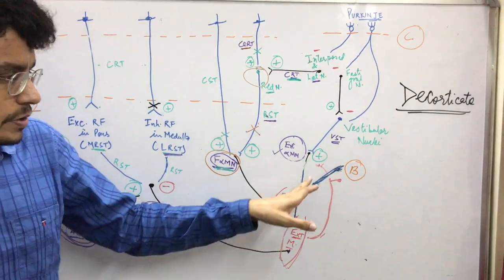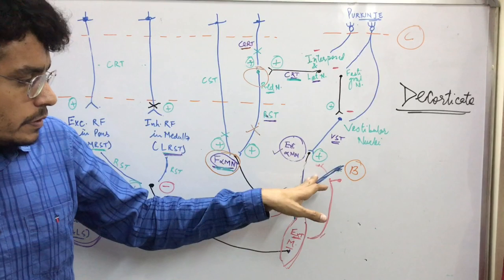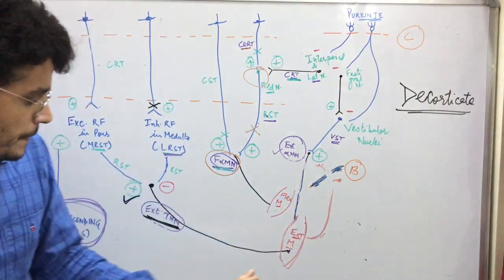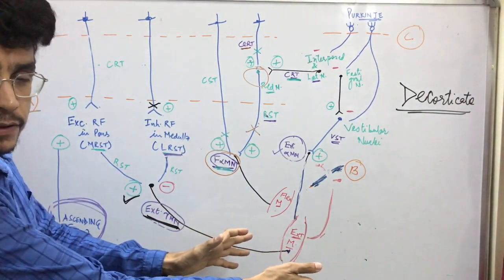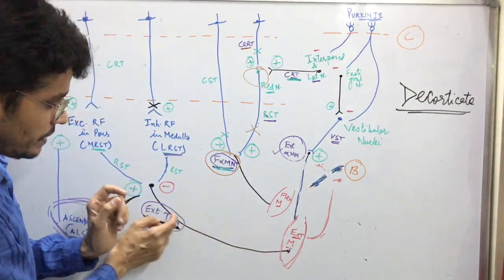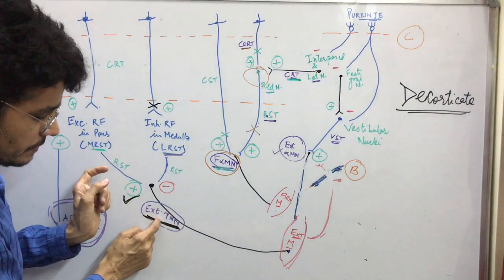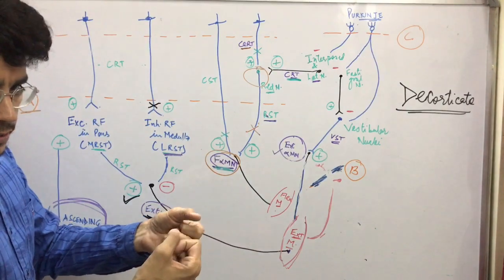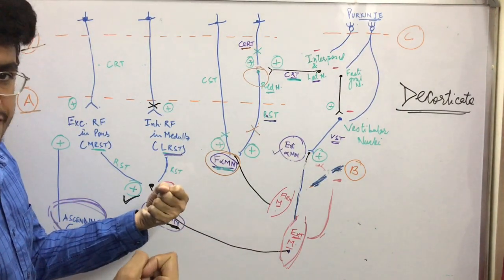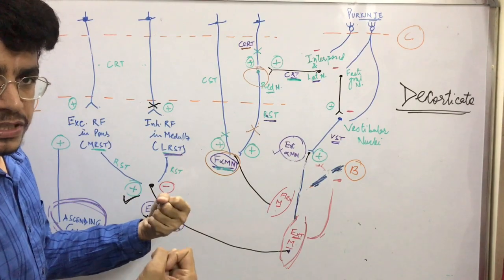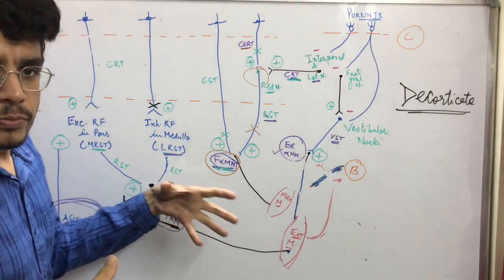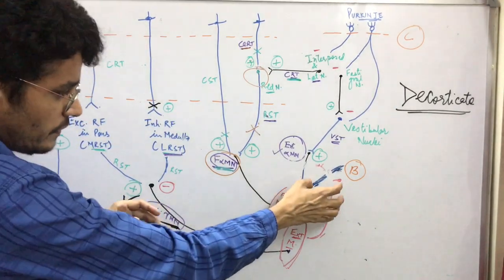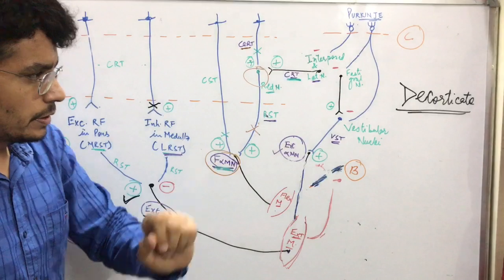It means this decorticate rigidity is acting via gamma motor neurons. Even if we remove the dorsal root supply to the extensor alpha motor neuron, there is still contraction of the extensor muscle. It means the extensor muscle gamma motor neuron is getting more and more excited. When the gamma motor neuron is more excited, it stretches the muscle spindle more, and because of that stretching, alpha motor neuron ultimately also makes the muscle contract. That is the significance of the dorsal root cut experiment.